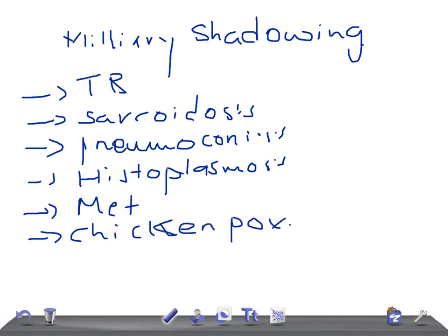So these are really very important causes to remember. To revise: if you see miliary shadowing, think of tuberculosis, sarcoidosis, pneumoconiosis, histoplasmosis, metastasis, and chickenpox. Thank you so much for watching, take care.